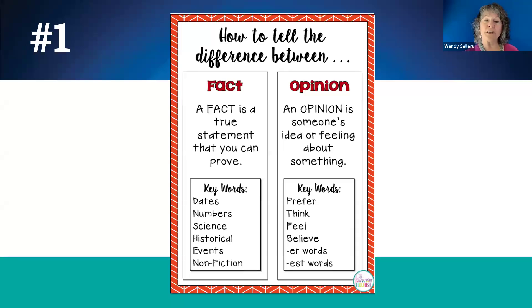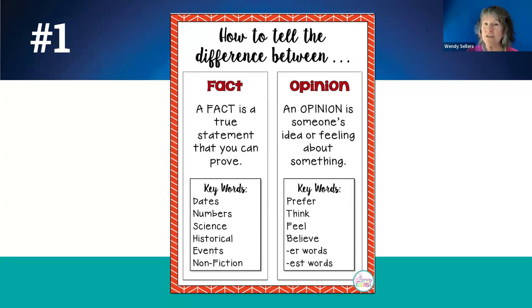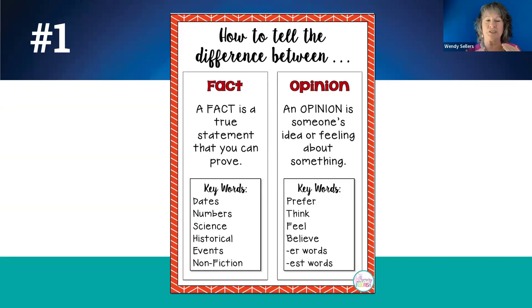On the other hand, an opinion question is someone's personal feeling, idea, belief, or value. There can be as many opinions as there are people in the world, so there is no one right answer. Words that will tip you off to an opinion question are things like: I prefer, I think, I feel, I believe. Also words that are comparisons like bigger, better, worse, or bad — those kinds of words tip you off to an opinion question.